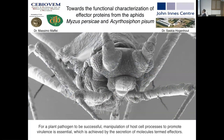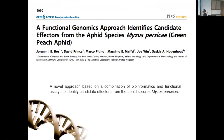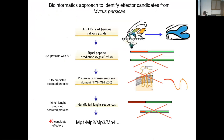For a plant pathogen to be successful, manipulation of host cell processes to promote virulence is essential, achieved by the secretion of effector molecules. To do that, we used a novel approach based on a combination of bioinformatics and functional assays to identify effectors from Myzus persicae. We started with the ESTs from salivary glands of Myzus persicae, then looked for proteins containing a signal peptide, and removed all proteins with a transmembrane domain. We finished by identifying 46 candidate effectors.